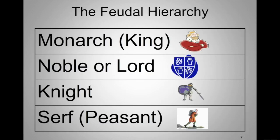We usually use a pyramid to depict this system. At the top is the monarch; beneath them is the noble or lord controlling day-to-day operations of a manor. Knights were trained soldiers — often called mercenaries because they fought for whoever paid them. The majority of people were serfs or peasants who did the farming and had pretty difficult lives.